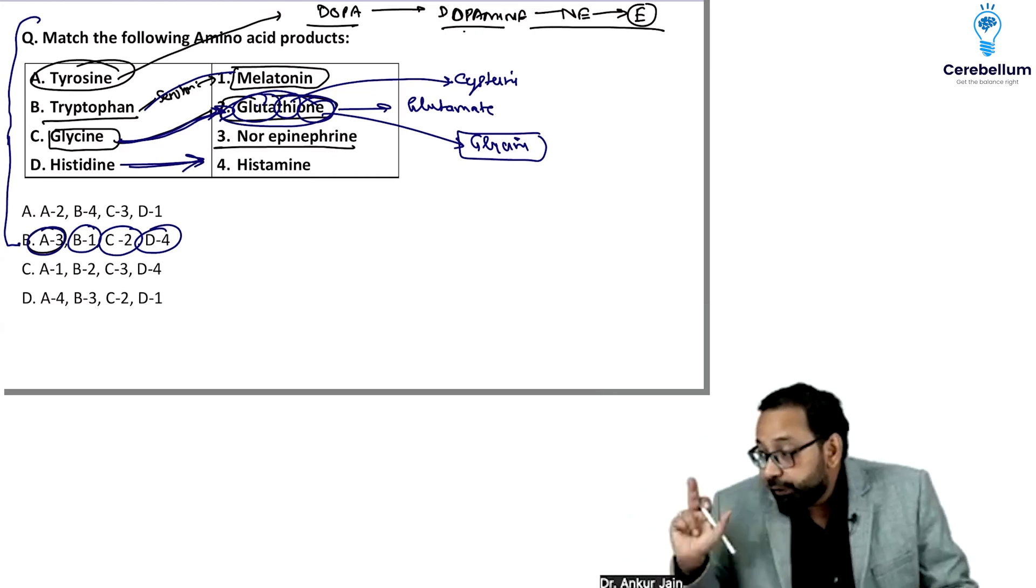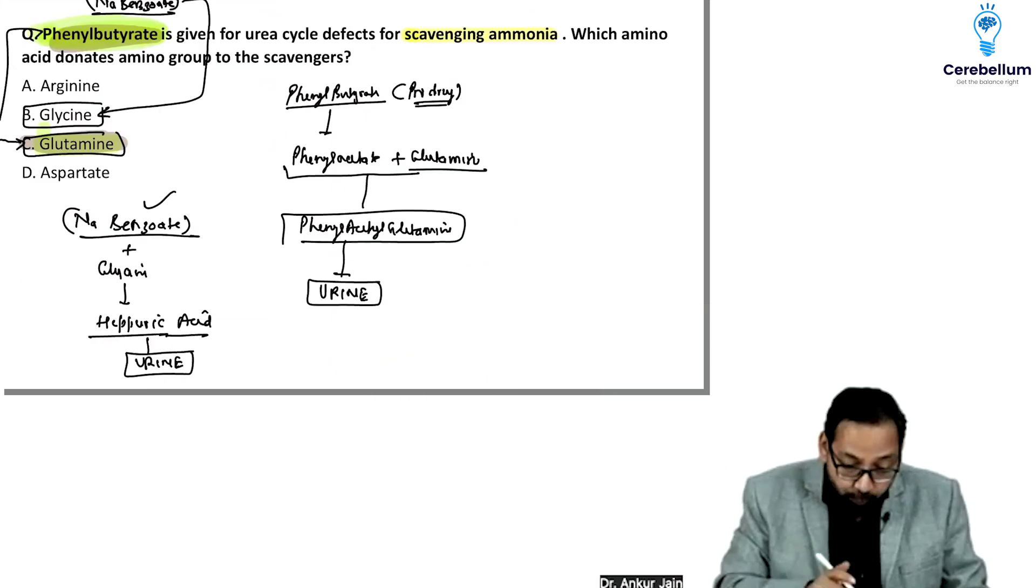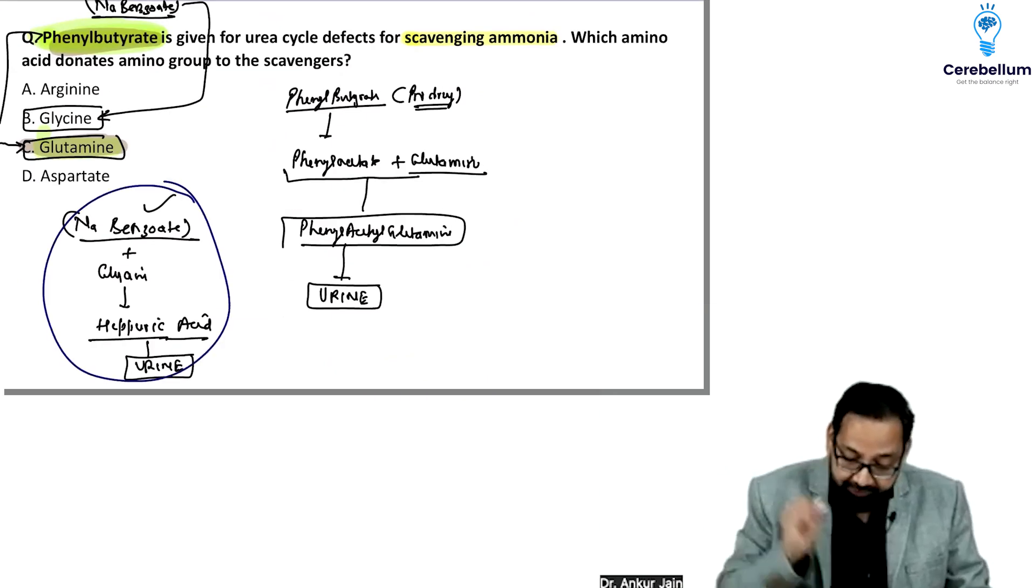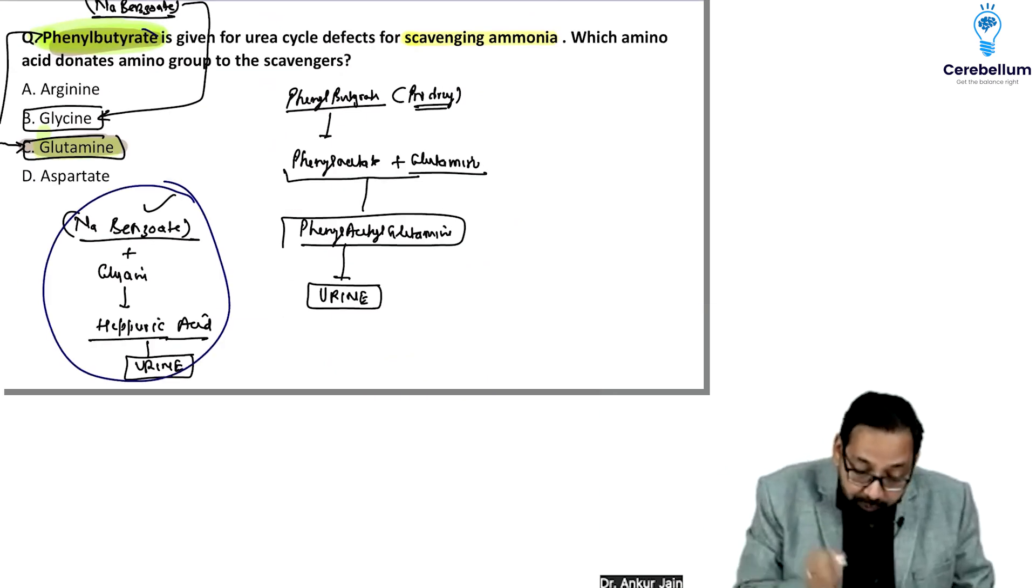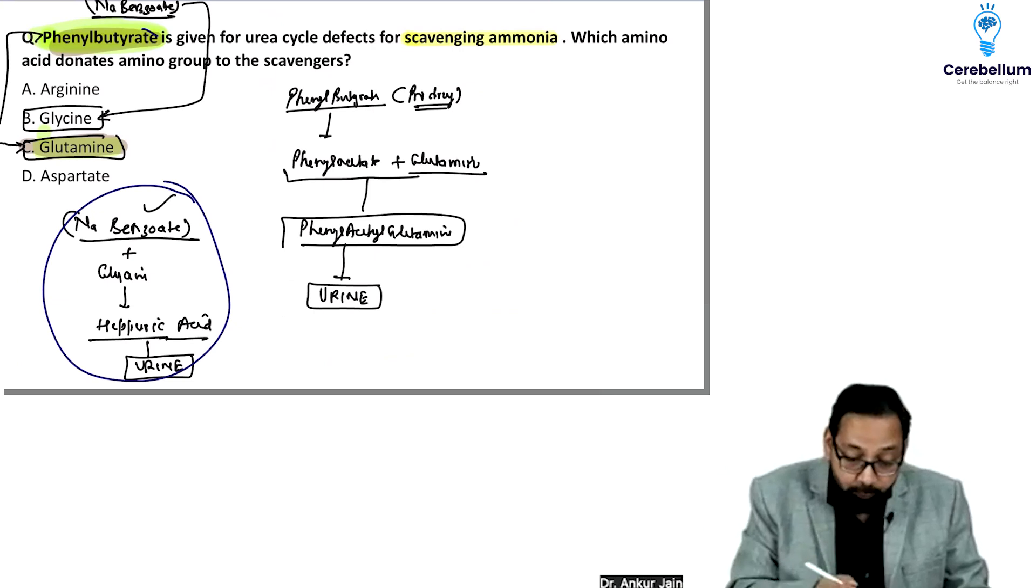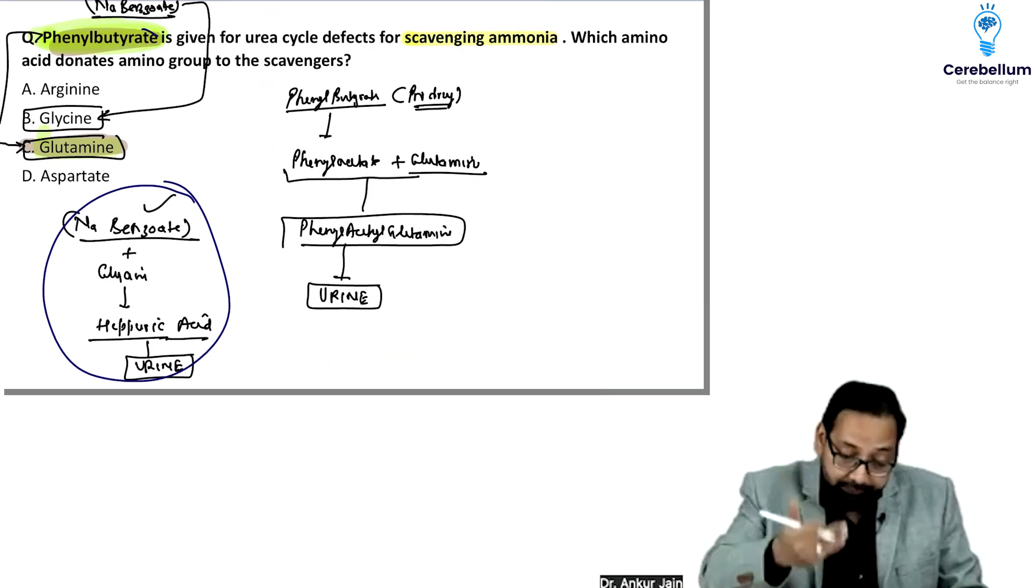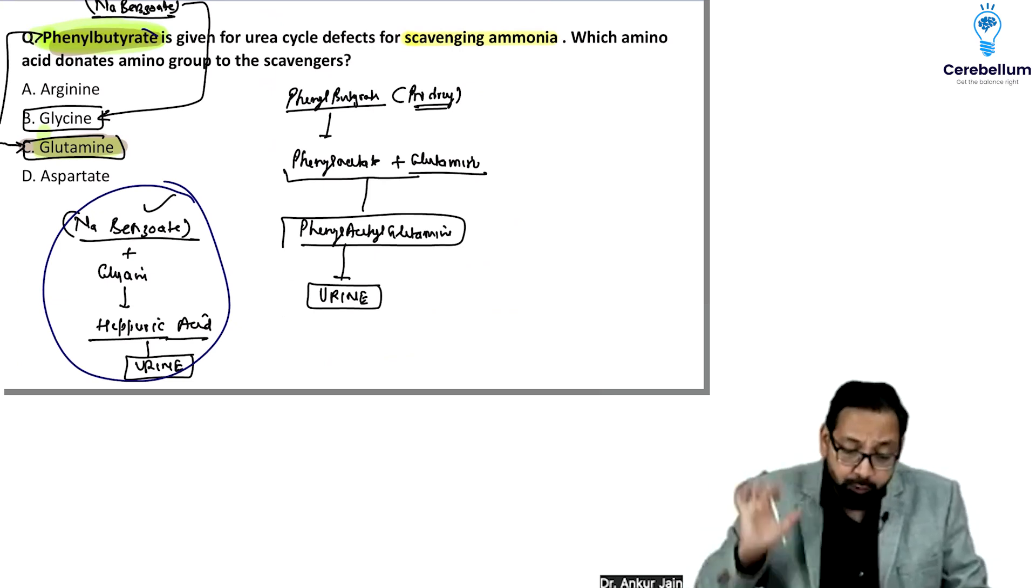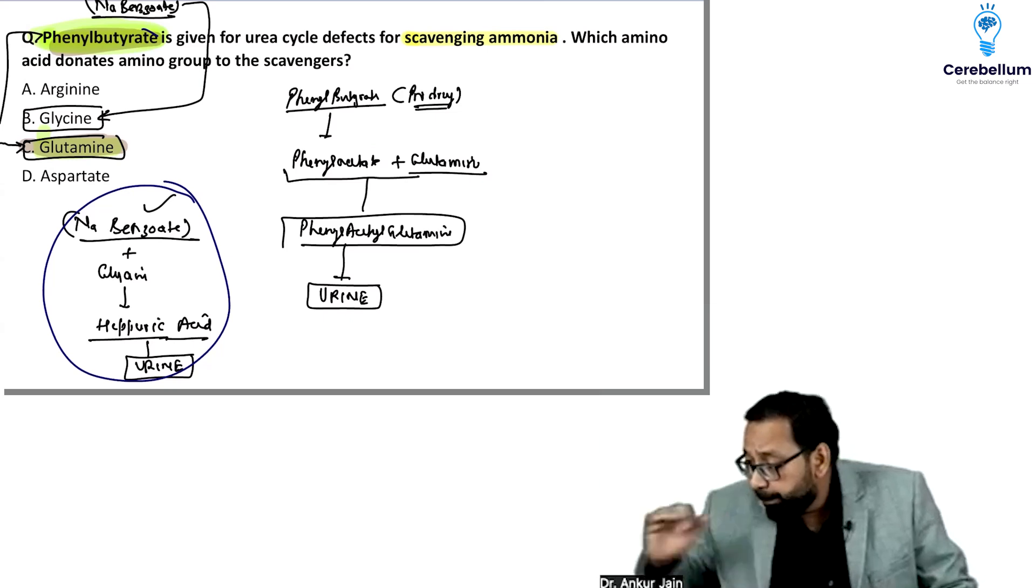Which amino acid donates to benzoate? The answer would be glycine. Which donates to phenylbutyrate? Glutamine donates its amino group in the form of phenyl butyrate.